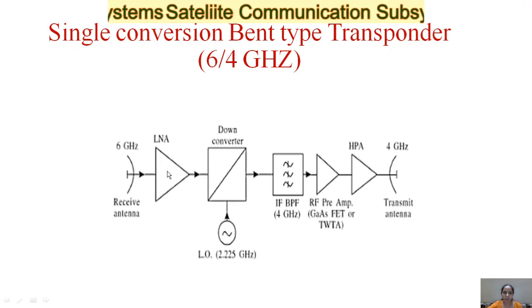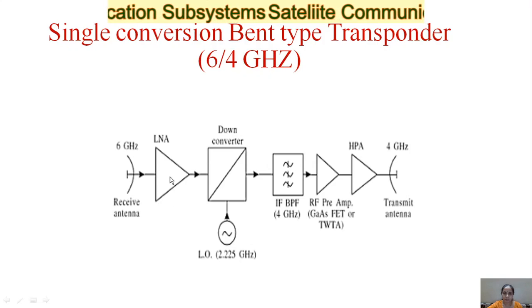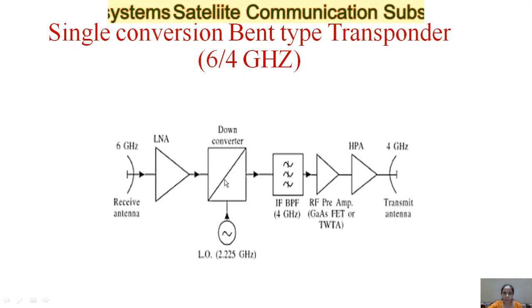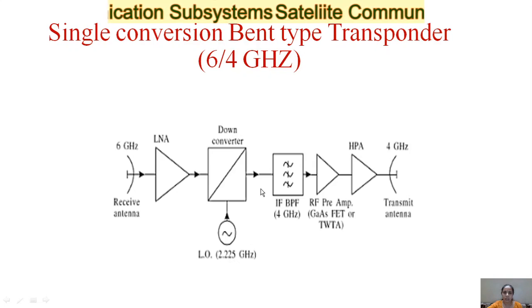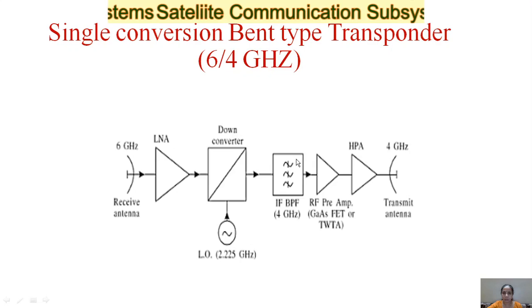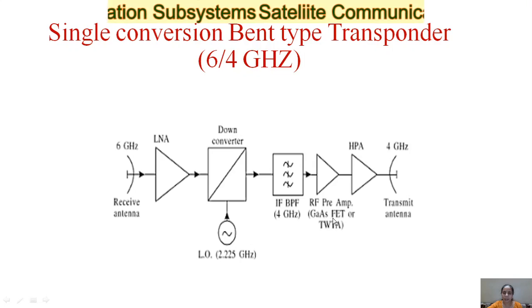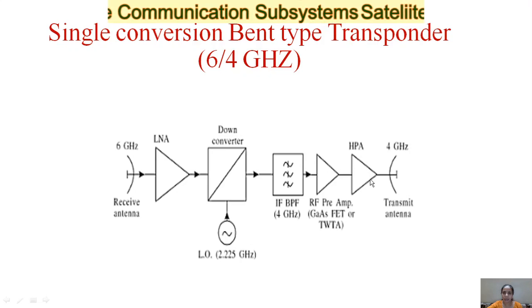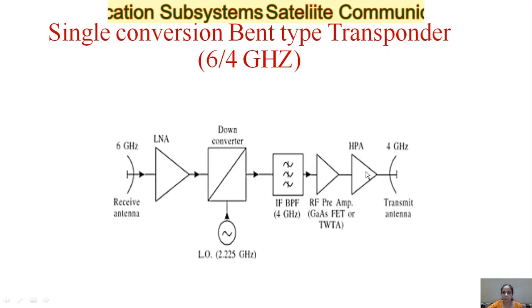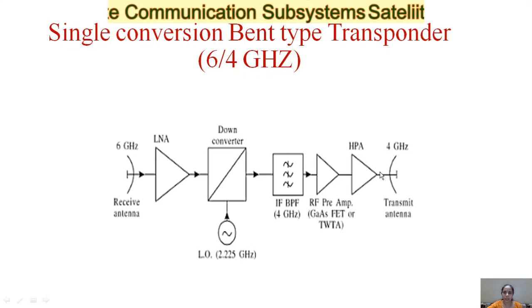In the block diagram of the single conversion bent-type transponder, the input frequency of 6 GHz is given to the low noise amplifier, which filters the noise. The signal is then given to a down-converter with a local oscillator of 2.225 GHz, producing an intermediate frequency signal of 4 GHz. This is passed to a band-pass filter and then to RF preamplifiers — either a gallium arsenide FET amplifier or a traveling wave tube (TWT) amplifier. Finally, it is given to a high power amplifier, producing an amplified 4 GHz output to the antenna. So 6 GHz is down-converted to 4 GHz in this single conversion type.